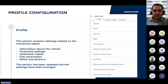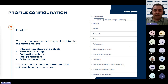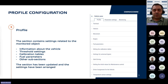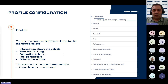The profile section retains its standard function of vehicle or object configuration. Within this section, users can specify vehicle information, establish threshold values, upload calibration tables, and fine-tune various object settings, encompassing safe driving parameters, movement control, fuel management, universal input configuration, and other previously available functionalities.